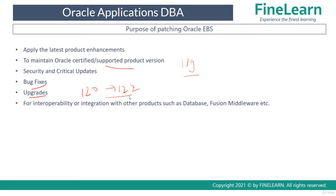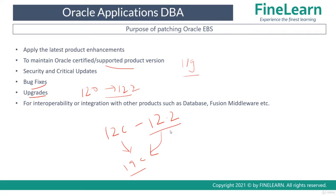Finally, patching is needed for interoperability or integration. For example, if you are using a 12c database with your 12.2 eBusiness Suite and you need to upgrade the database to 19c, you first have to apply interoperability patches on 12.2 related to the 19c database. These interoperability patches ensure Oracle eBusiness Suite runs smoothly with 19c. Similarly, if you are upgrading your Fusion Middleware — for example, upgrading your web tier from 11.1.7 to 11.1.9 — Oracle will ask you to apply certain interoperability patches with the latest versions of your technology stack, that is database, Fusion Middleware, etc.